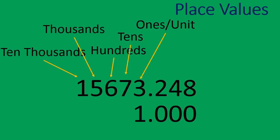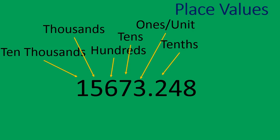On the right of the decimal, we start getting some things that are a little bit different. The first number, we call this the tenths — with that 'th' on the end — tenths. It is one tenth. In this case, we have two tenths. A way that you could remember this is to write it out in the form of money. If that was a one, then it would be ten cents, so it's a tenth.